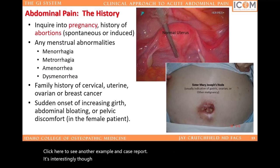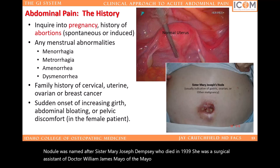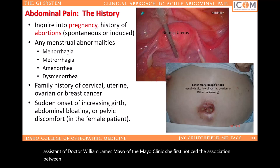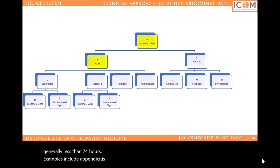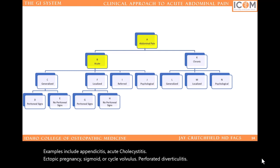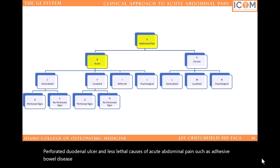Let's start down the pathway of acute abdominal pain. This refers to pain of acute onset, generally less than 24 hours. Examples include appendicitis, acute cholecystitis, ectopic pregnancy, sigmoid or cecal volvulus, perforated diverticulitis, perforated duodenal ulcer, and less lethal causes such as adhesive bowel disease, which can lead to a small bowel obstruction. A glaring deficiency in the flowchart is lack of any attention given to the pediatric patient — the patient who can't voice their discomfort, a baby or even a comatose trauma patient. Pediatric abdominal findings range from an omphalocele to gastroschisis, midgut volvulus, pyloric stenosis, or necrotizing enterocolitis.